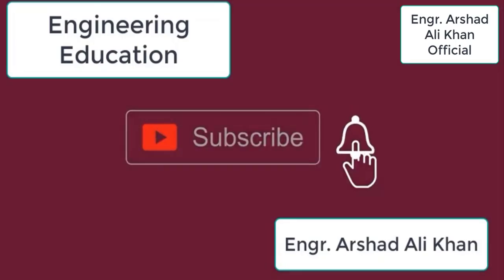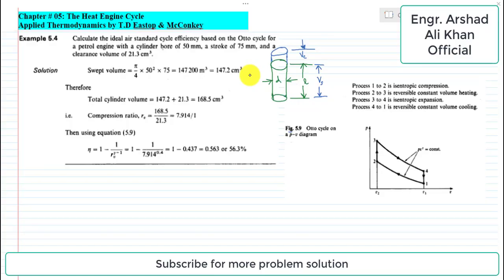Hello students, welcome to my channel Engineering Education. In this video we are going to discuss Example 5.4 from Chapter 5, The Heat Engine Cycles, from the book Applied Thermodynamics by T.D. Eastop and McConkey.